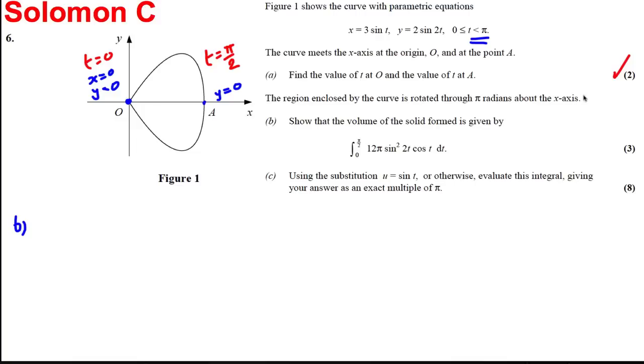Now we want to show that this region swept around π radians about the x-axis has volume given by the following. The volume is going to be equal to π times the integral between 0 and π/2 of y² times dx/dt dt. That's y² which is 2sin(2t) all squared.